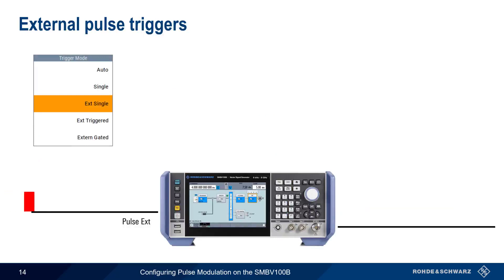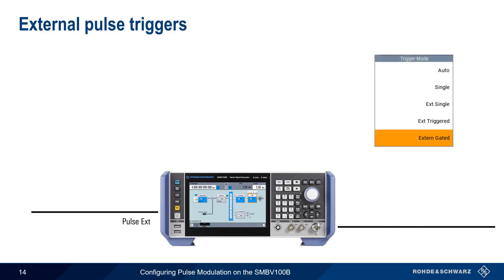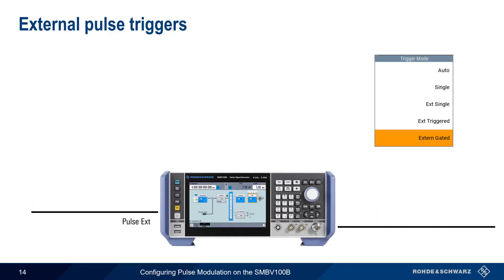In External Single mode, each received trigger causes a single pulse to be sent. In External Triggered mode, pulses are sent continuously after a single trigger signal is received. And in External Gated mode, pulses are sent as long as the external gate signal is present. Pulses are not transmitted if no external signal is present.